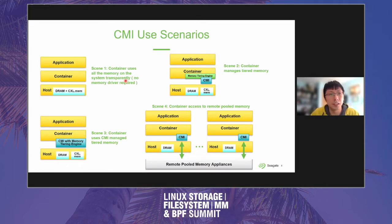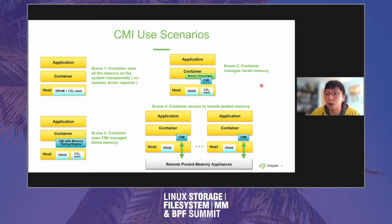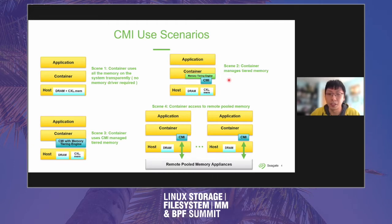Here are some basic scenarios where the memory interface could apply. The first scenario is basic: nothing needs to change, the container uses whatever memory the system provides. In the second scenario, the container itself wants to implement a tiering engine, and that engine needs to know which physical memory is from DRAM and which is from CXL.